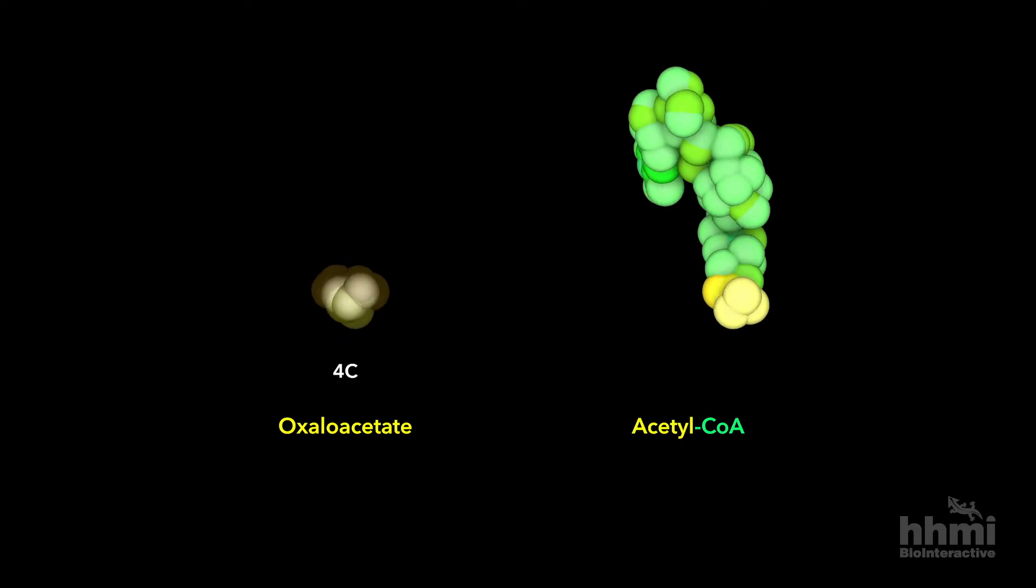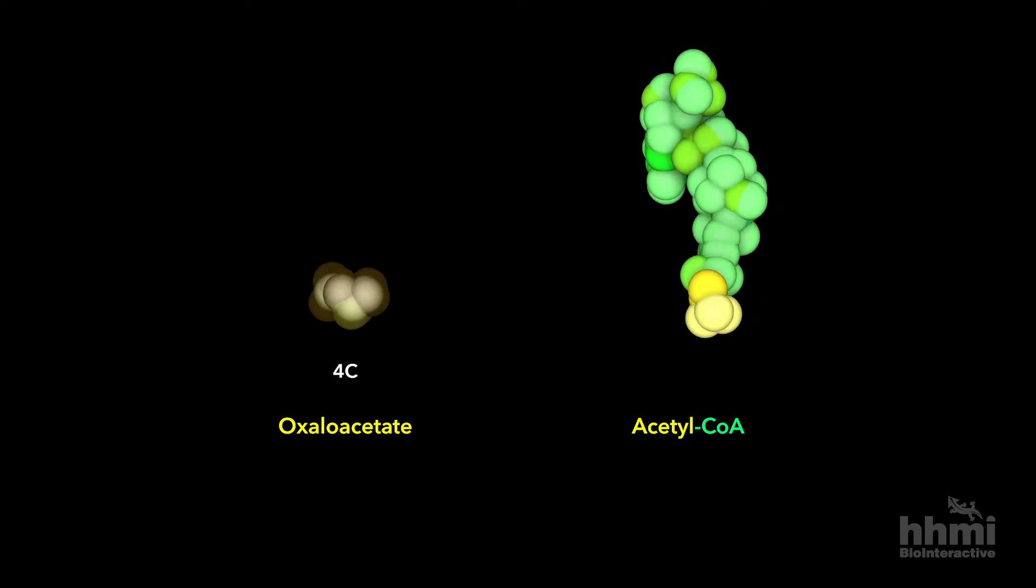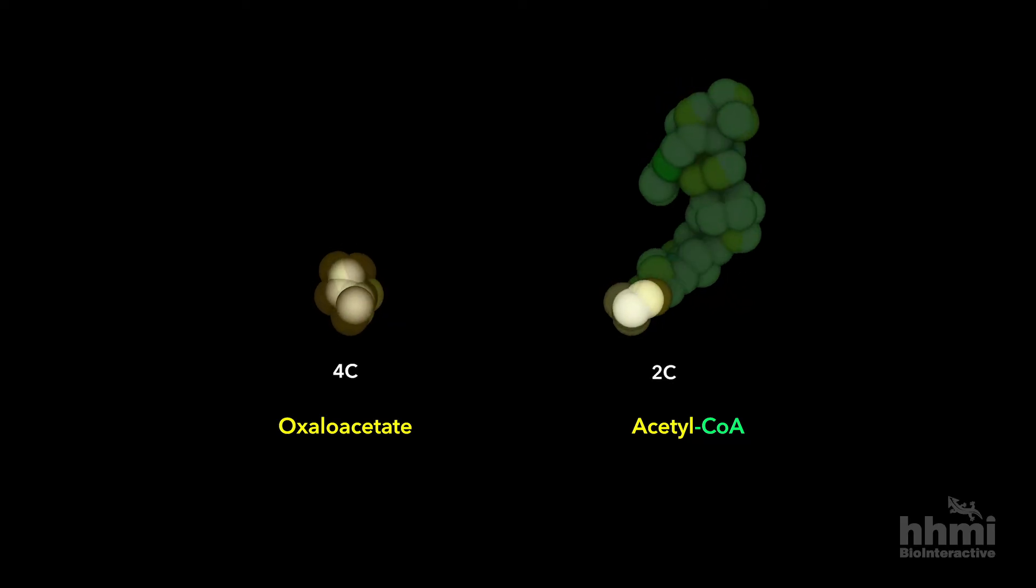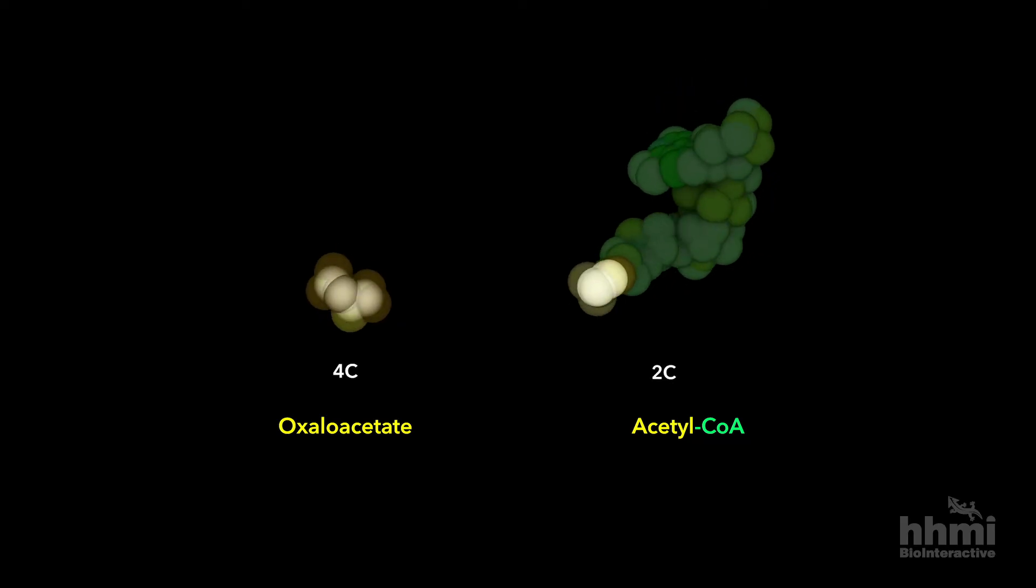The citric acid cycle starts with the end product of a previous cycle, the four-carbon molecule oxaloacetate. New carbon enters from glycolysis in the form of acetyl-CoA, a two-carbon acetyl group attached to coenzyme A.